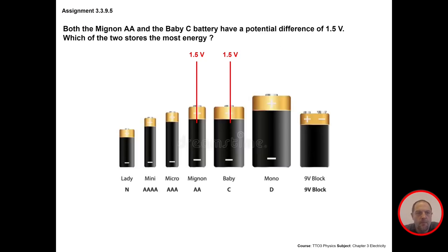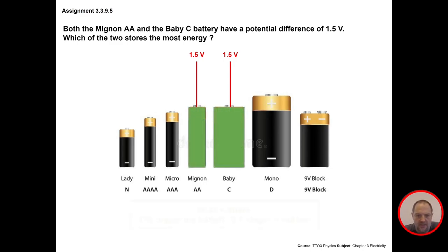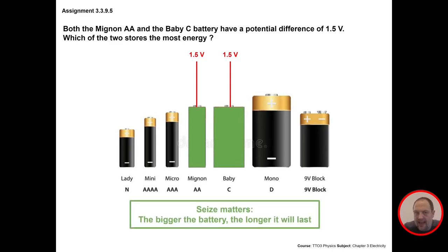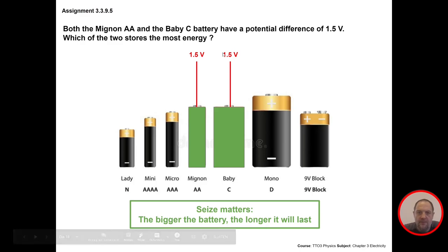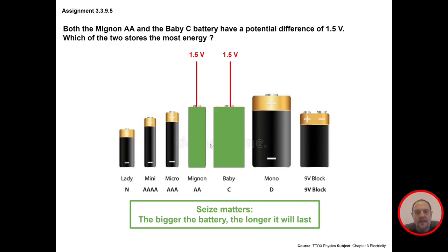Question: both the Magnums AA and the C battery have a potential difference of 1.5 volt. Which of the two stores the most energy? The answer is that the two batteries are not the same size, and with batteries, size matters. The bigger the battery, the longer it will last if they have the same potential difference. Type C is bigger than AA, which means it can store more electrons, and those electrons will of course be filled with energy.